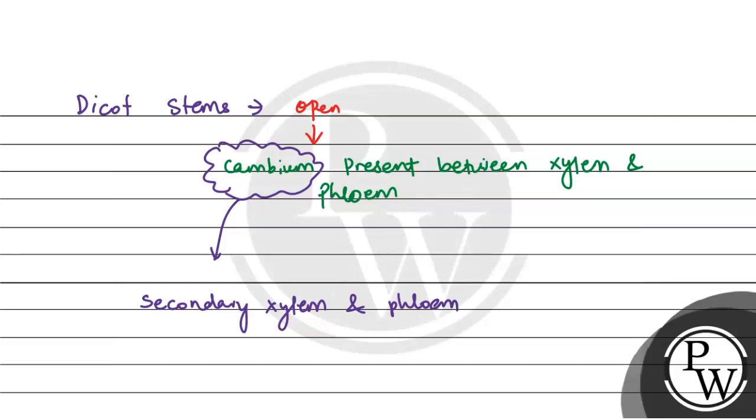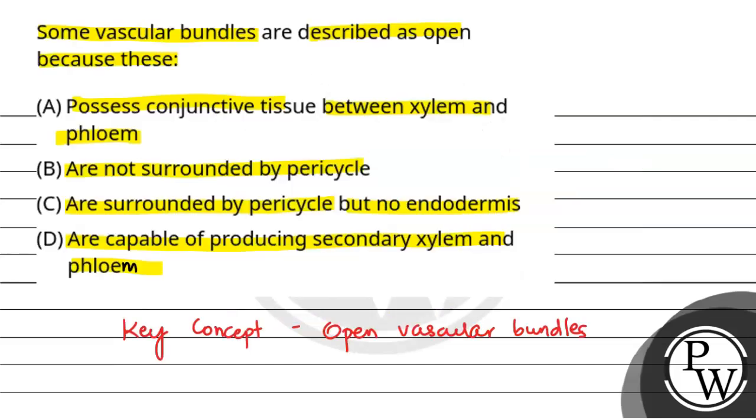So easily open vascular bundles. The first option, possess conjunctive tissue between xylem and phloem - this is wrong. Not surrounded by pericycle - this is also wrong. Surrounded by pericycle but no endodermis - this is also wrong. But they are capable of producing secondary xylem and phloem - yes, this is the right option.